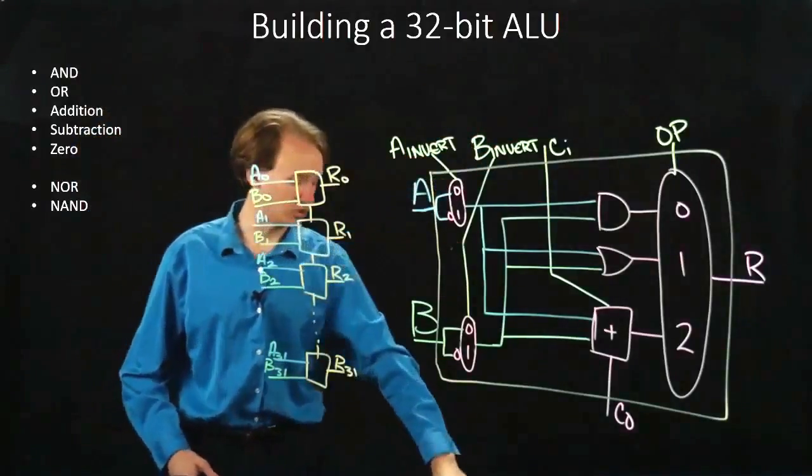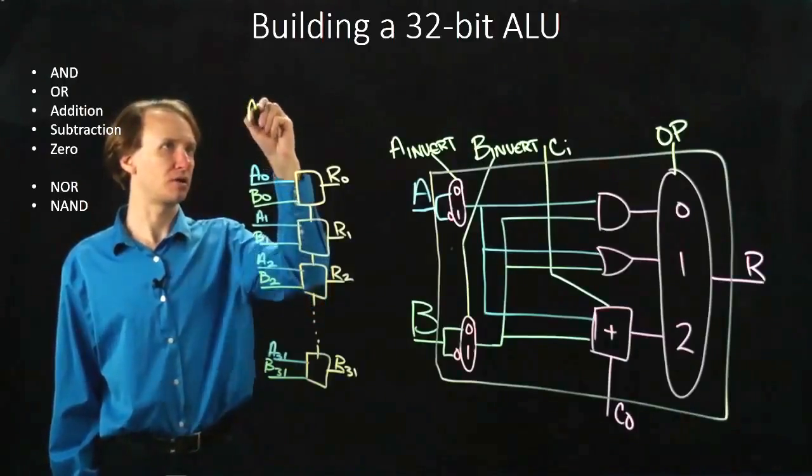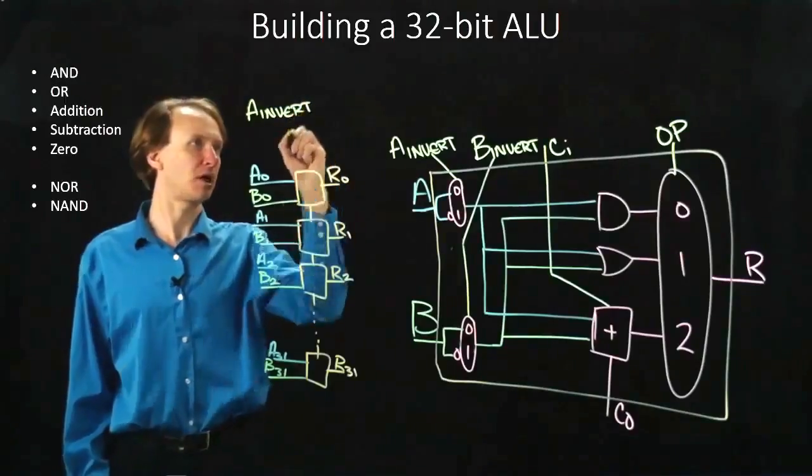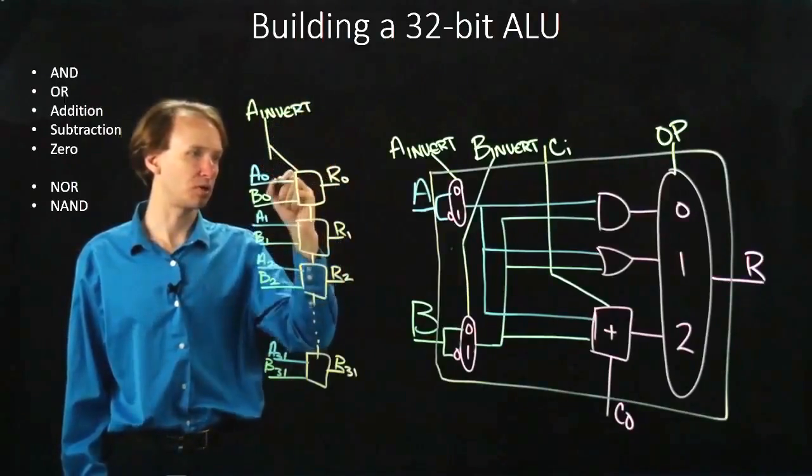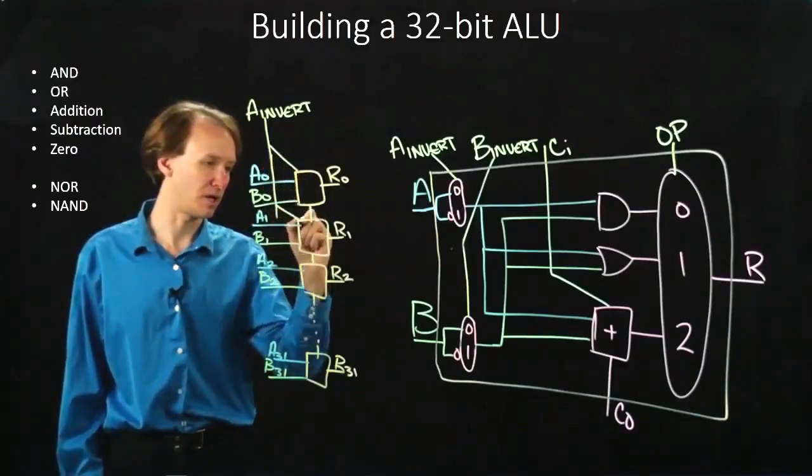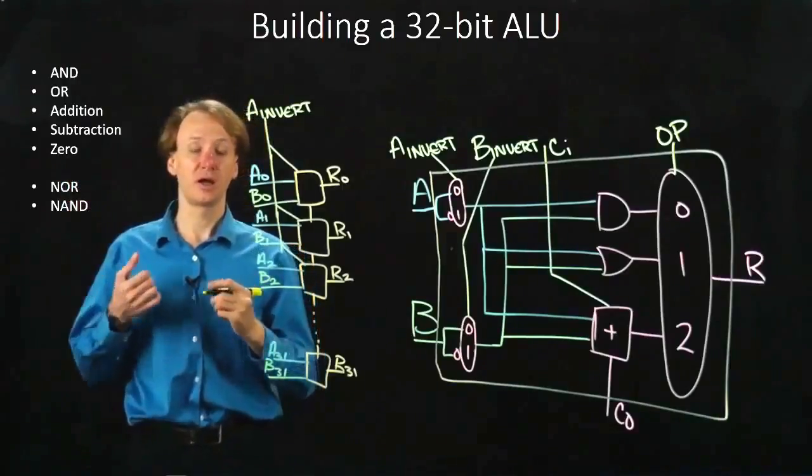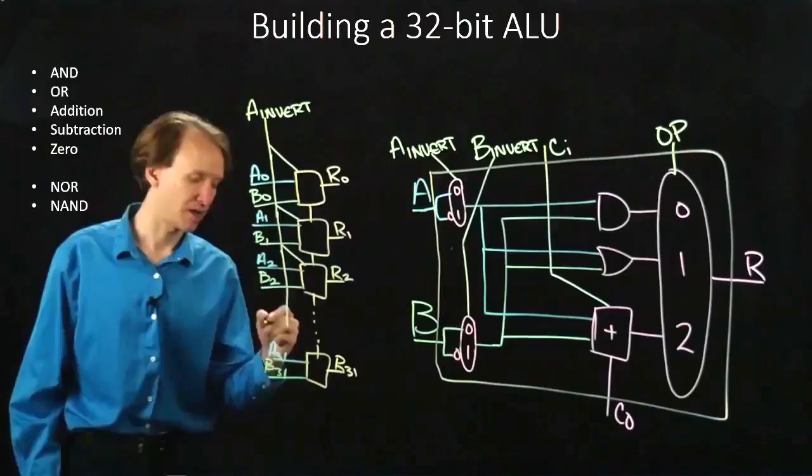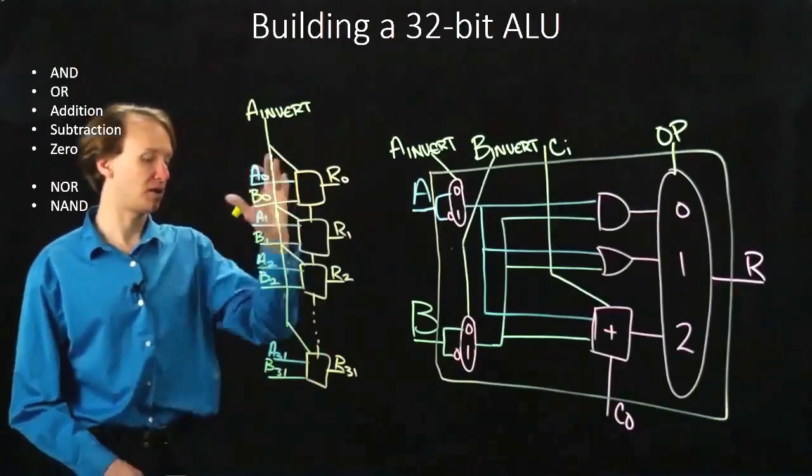Now we have all of the control signals. So I have an A invert line, and I definitely need to pass this one to each one of the one bit ALUs that I've got. In order to do NOR or NAND, I need to invert all of my A's and all of my B's. So there's my A invert line.